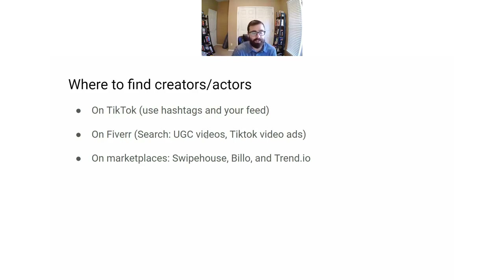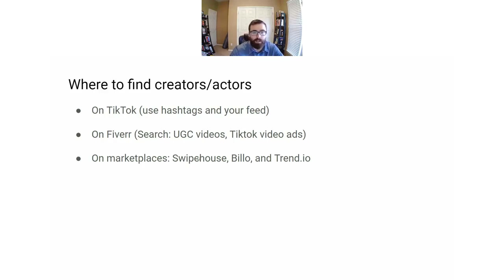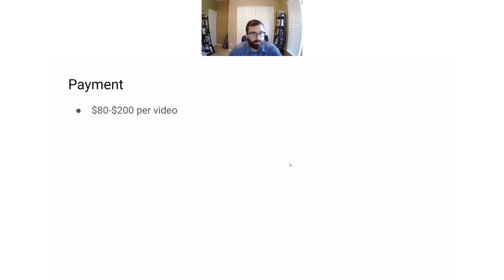There are a few other websites or marketplaces where you can also find UGC or TikTok style videos. The best ones I've tried are Swipehouse, Billo, and Trend.io. What I like to pay creators per video is between $80 and $200. I wouldn't go much higher or lower than that — if they're willing to do a video for less than that, it's probably low quality.